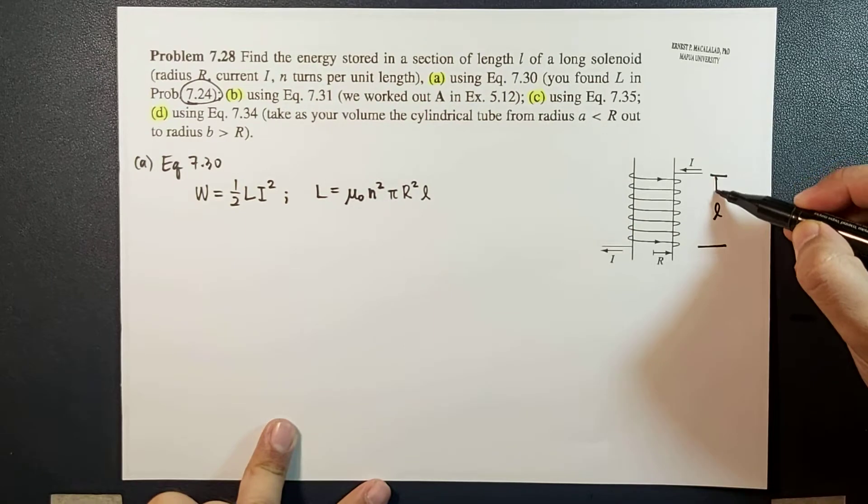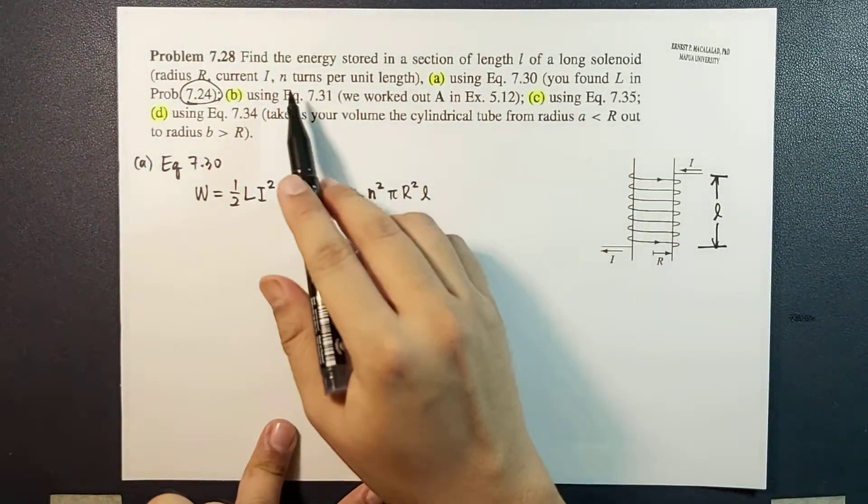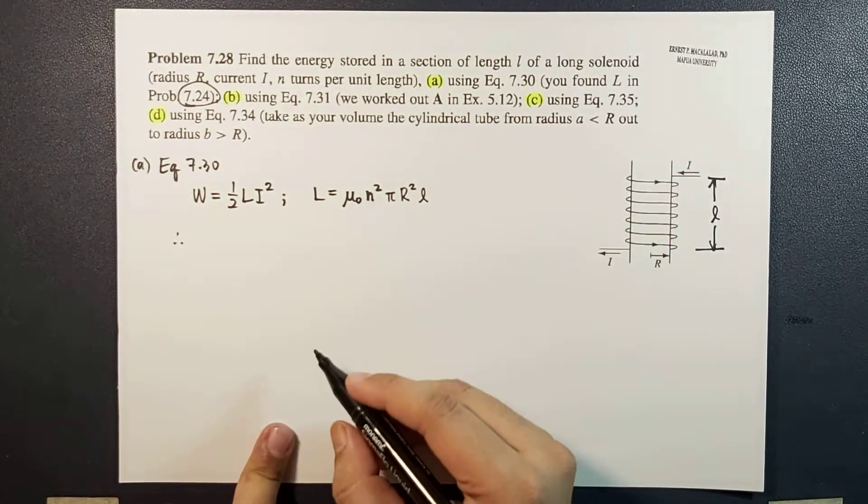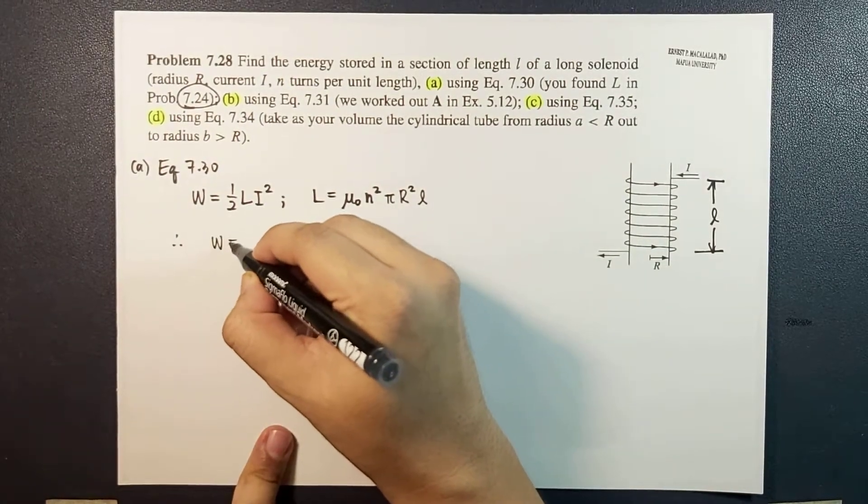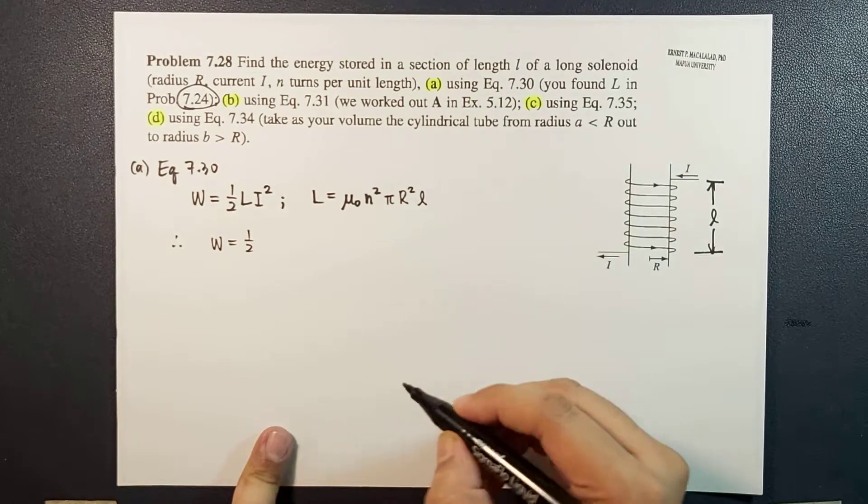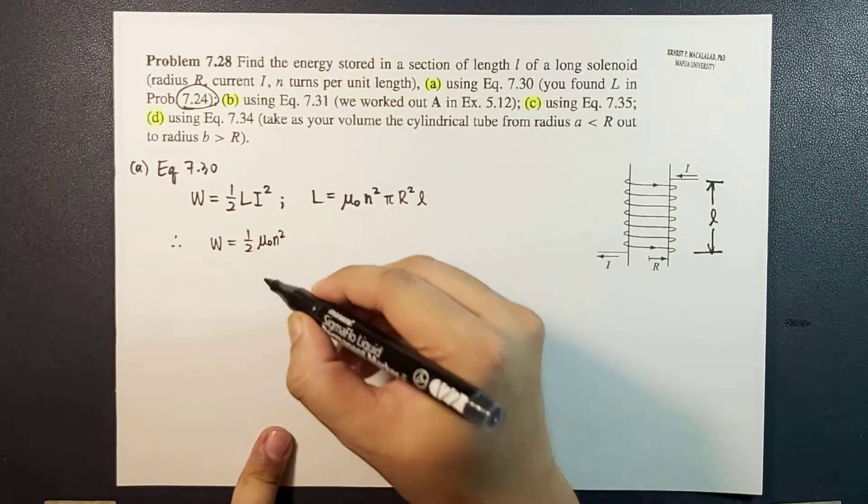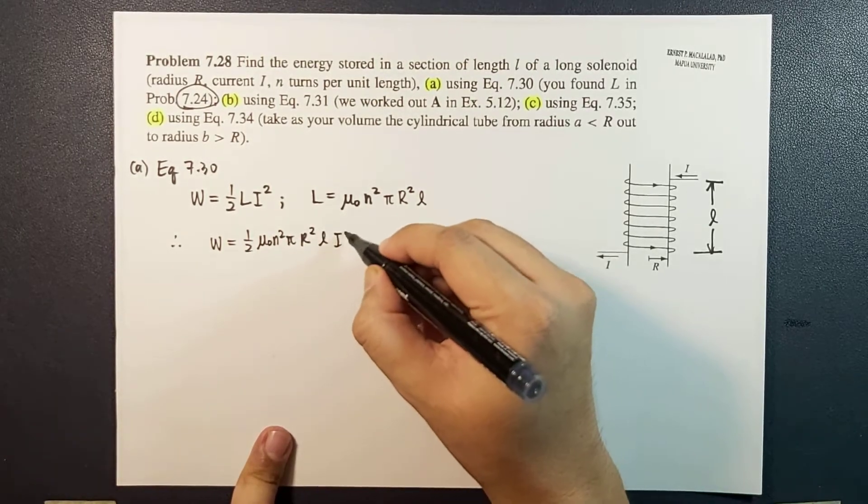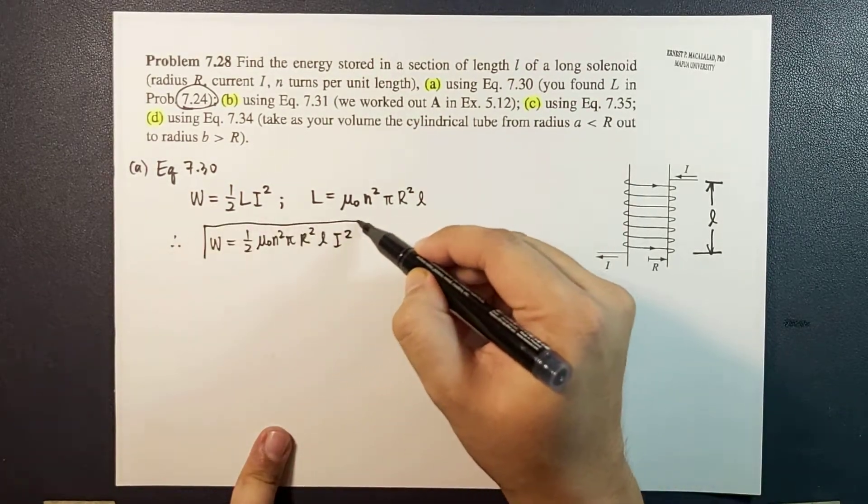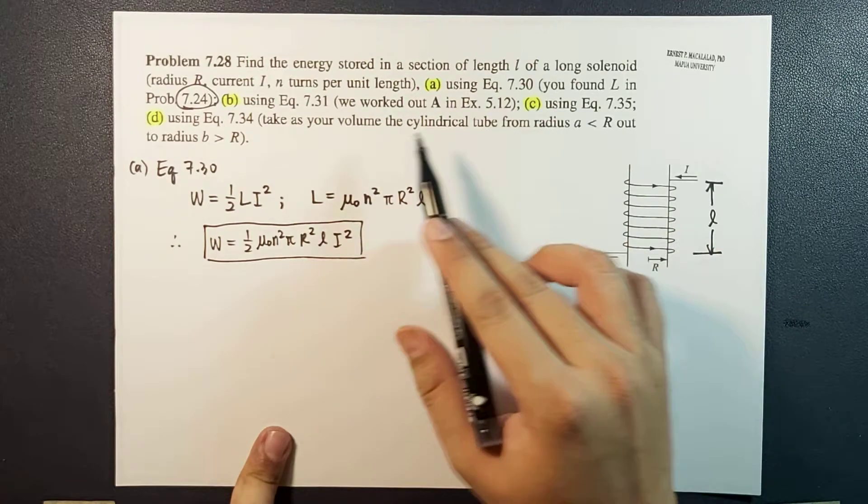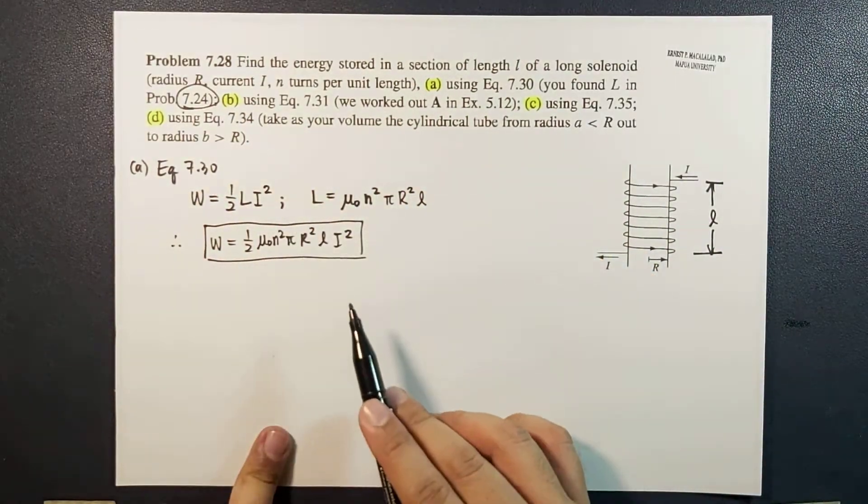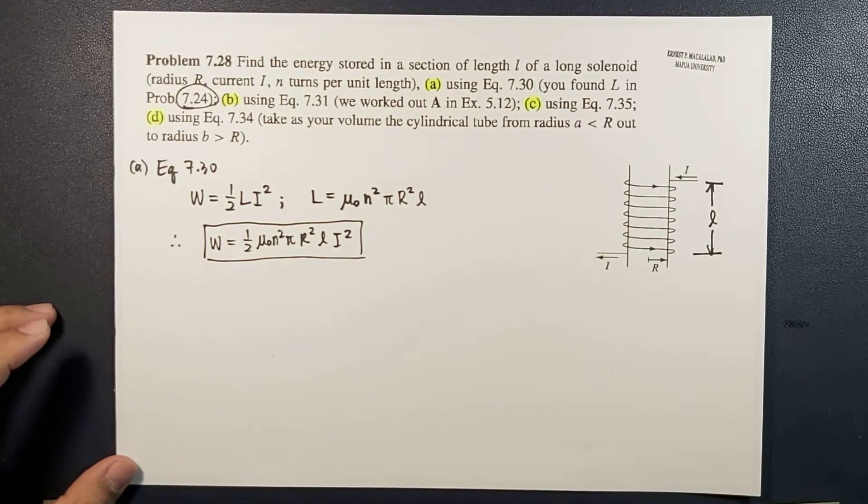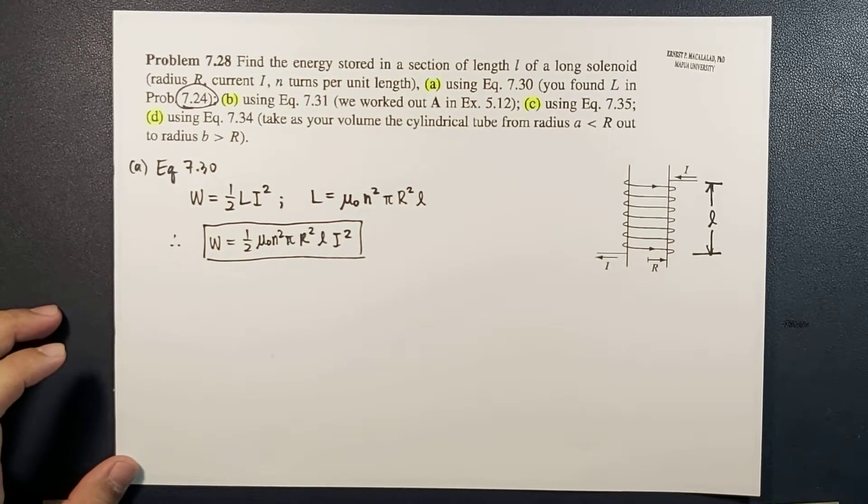Therefore, with simple substitution, the work done will just be equal to one half μ₀n²πr²l i². As simple as that. In the succeeding methods we should find the same total work done. This is the easy part. Now let's try letter b.